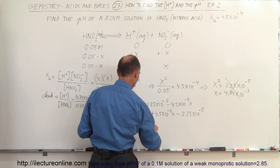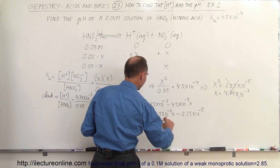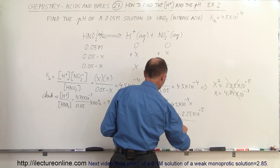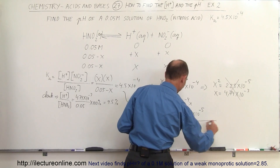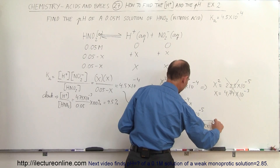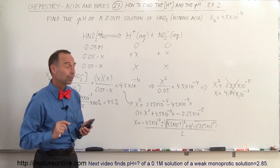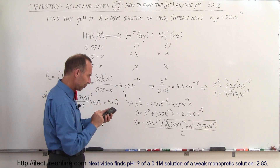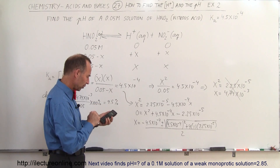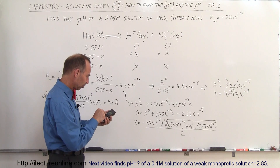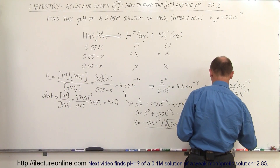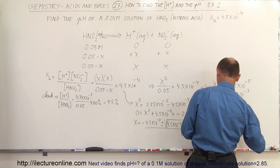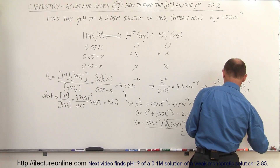Using the quadratic formula, X equals negative 4.5×10⁻⁴, plus or minus the square root of (4.5×10⁻⁴)² plus 4 times 2.25×10⁻⁵, all divided by 2. Evaluating inside the square root and taking the root, we get 9.5×10⁻³, so X equals negative 4.5×10⁻⁴ plus or minus 9.5×10⁻³, all divided by 2.